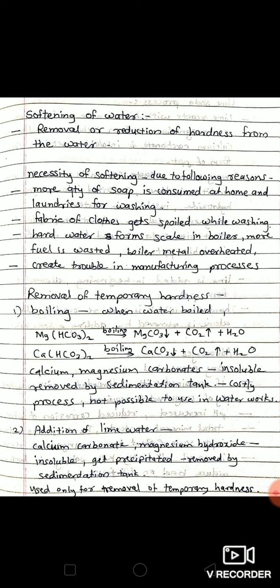Let's see the need for softening. Due to various reasons, softening is done. More quantity of soap is consumed at home and laundry for washing of clothes. This is due to the reason that about 25 ppm additional soap quantity is required for every 1 ppm of hardness in water.